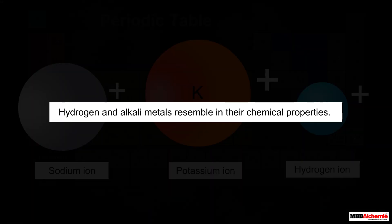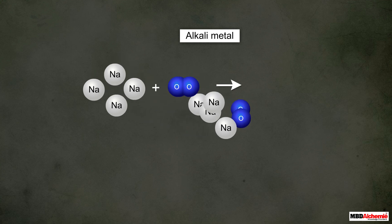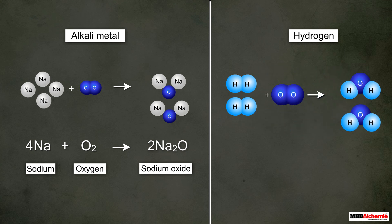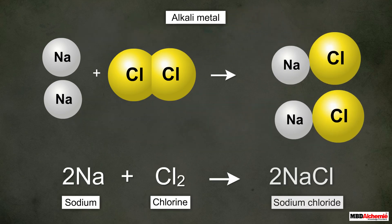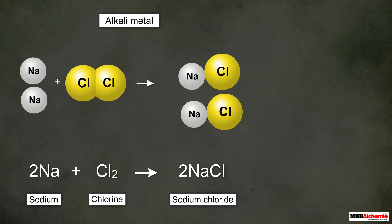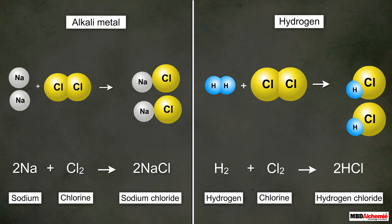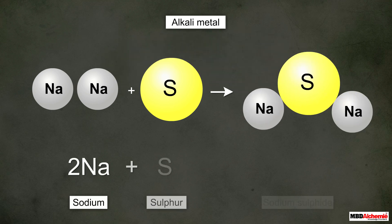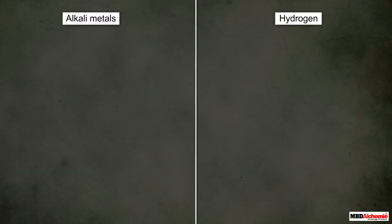Because of the ability to lose an electron to form uni-positive ions, hydrogen and alkali metals also resemble each other in their chemical properties. For example, an alkali metal combines with oxygen to form its oxide; similarly, hydrogen combines with oxygen to form hydrogen oxide, that is, water. Similarly, an alkali metal combines with chlorine to form its chloride, and hydrogen combines with chlorine to form hydrogen chloride, that is, hydrochloric acid.